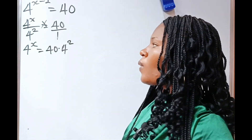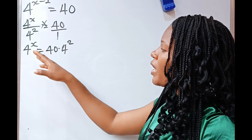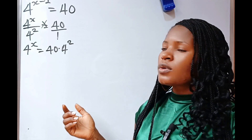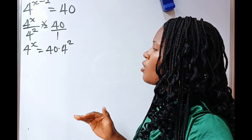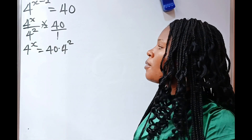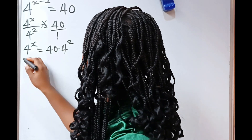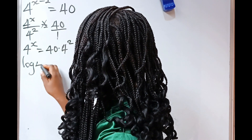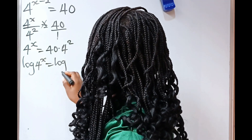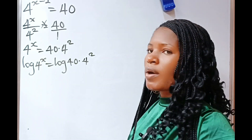Now, when you look at what we have on the board, you notice that the power is still our variable. So, we cannot solve it with any other thing apart from logarithm or ln. Now, if we introduce log to both sides of the equation, we have log 4 to the power of x is equal to log of 40 multiplied by 4 squared.